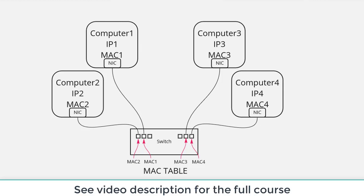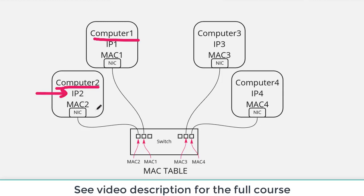IP addresses are what computer programs use to talk to each other. For example, let's say computer one needs to send a file and establish a connection to computer two as the destination. In order to establish that connection, computer one needs to know the IP address of computer two. Let's assume it does know the destination IP, but it does not know the destination MAC.